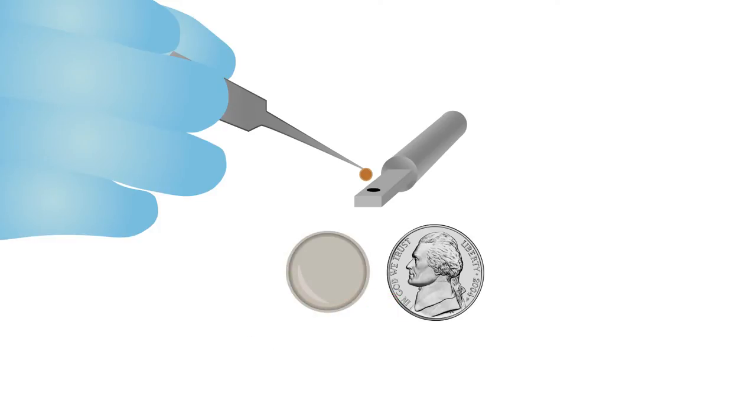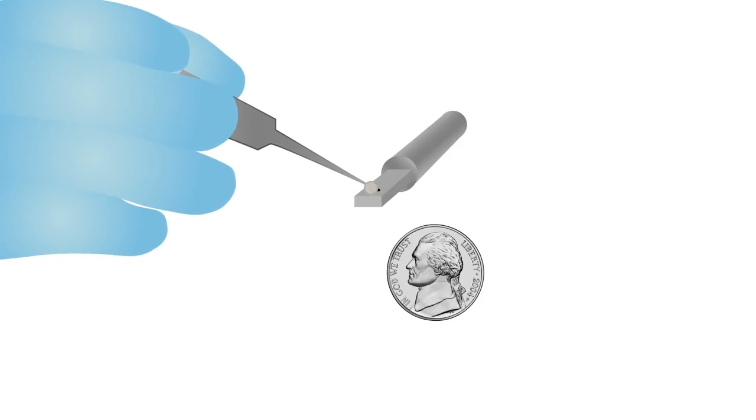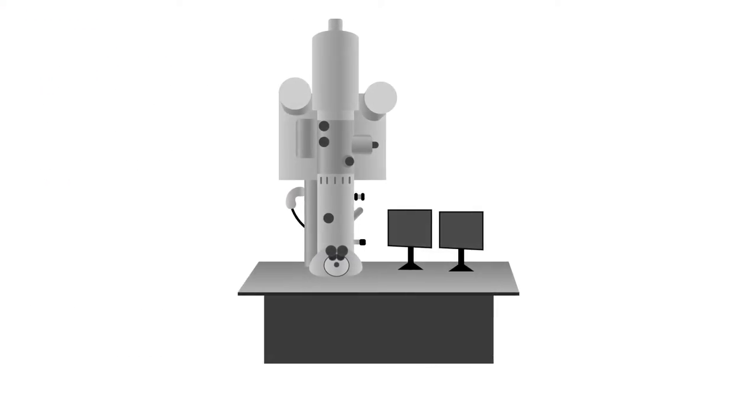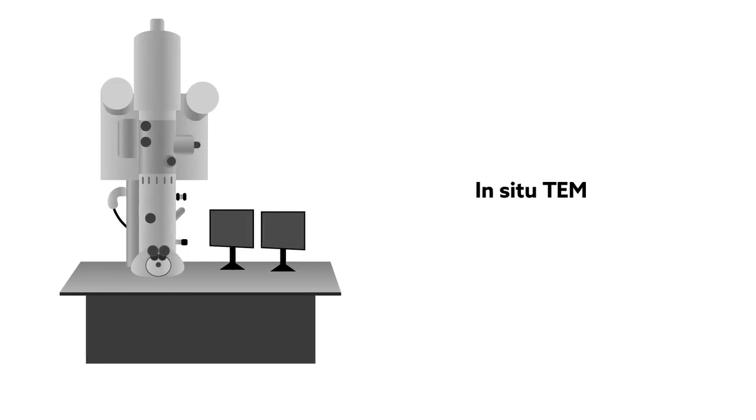To address these problems, scientists and engineers have devised various ways of miniaturizing rechargeable batteries and making their key components visible under a TEM, all while preserving battery function. Collectively referred to as in situ TEM, these techniques are helping researchers tackle some of the biggest questions in battery research.